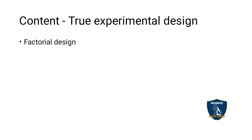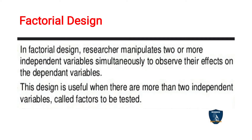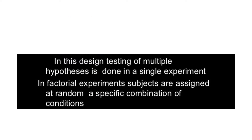In this video we are going to discuss about factorial design. What is factorial design? In factorial design, the researcher manipulates two or more independent variables simultaneously to observe their effects on the dependent variables. This design is useful when there are more than two independent variables, which are called factors, which are to be tested. In one design itself you can test multiple hypotheses in a single experiment.